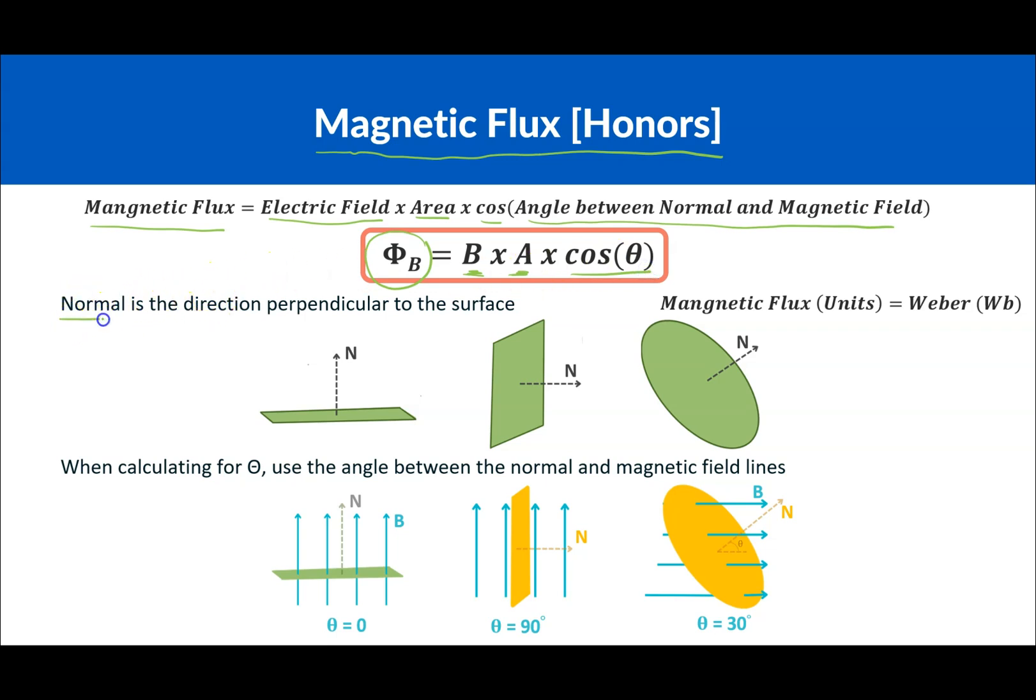Okay, so first of all, normal is the direction perpendicular to the surface. So if the surface is flat like this, the normal is going to be perpendicular to it, in this case going straight up or straight down. In this case, if we have a flat on the y-axis, then it's going to be only on the x-axis like that. If it's at an angle, it's going to be angled the other way.